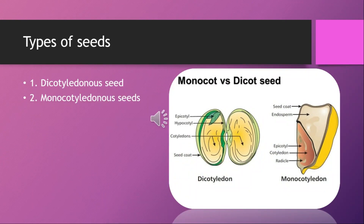Based on the number of cotyledons, seeds are classified as dicot seeds or monocot seeds. Dicot seeds have two cotyledons. The cotyledons become fleshy because of stored food. On seed germination, cotyledons develop into the first green leaves of the young plant. In such seeds, endosperm is absent. Examples include pea, gram, and all pulses.